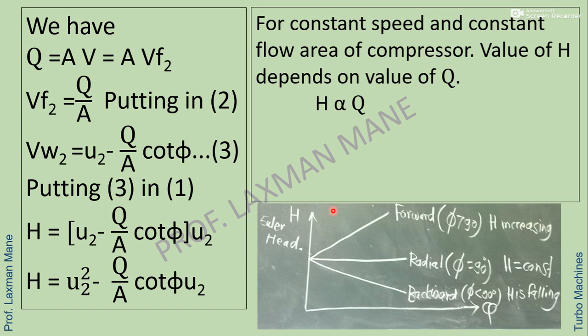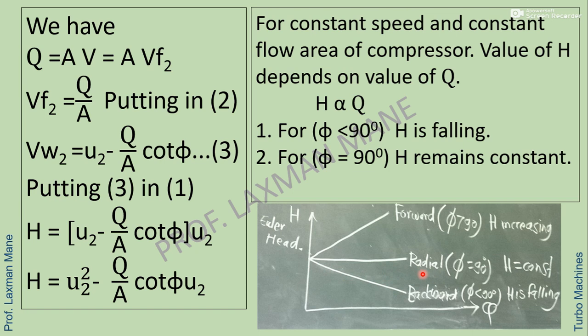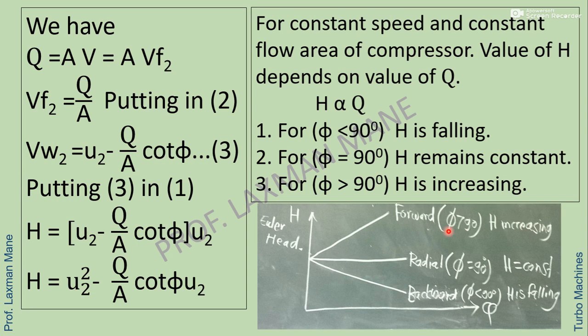There are three cases based on vane angle. On a graph with head on the vertical axis and discharge on the horizontal axis: for phi less than 90 degrees (backward curved vane), H decreases with Q; for phi equal to 90 degrees (radial vane), H remains constant, shown as a horizontal line; and for phi greater than 90 degrees (forward curved vane), H increases with Q.